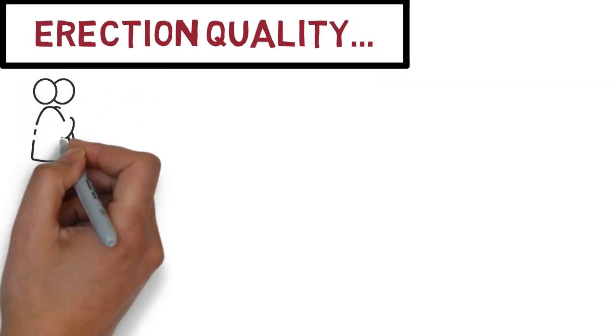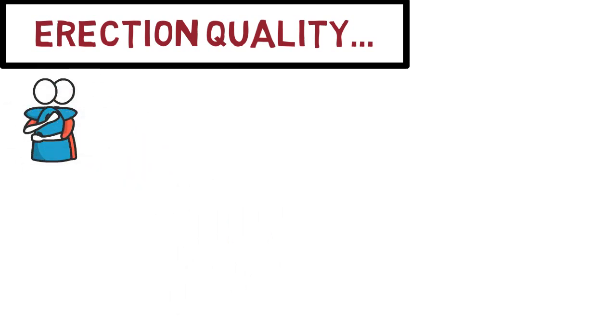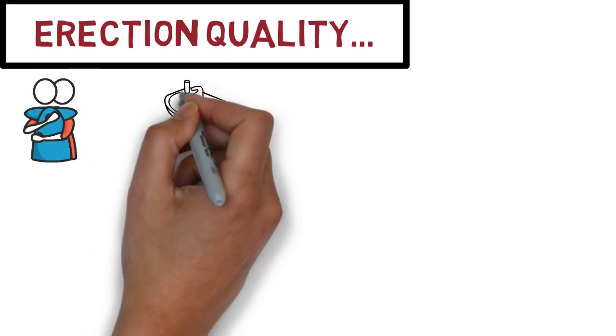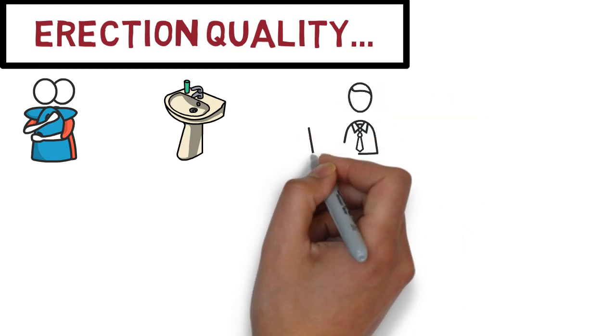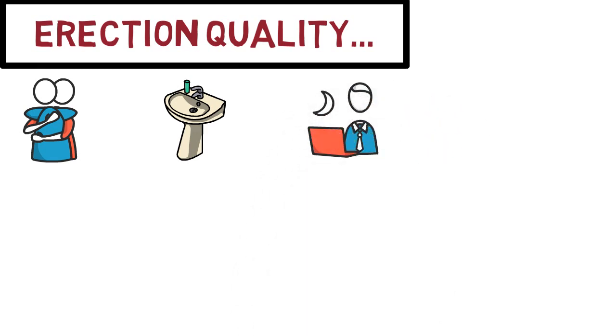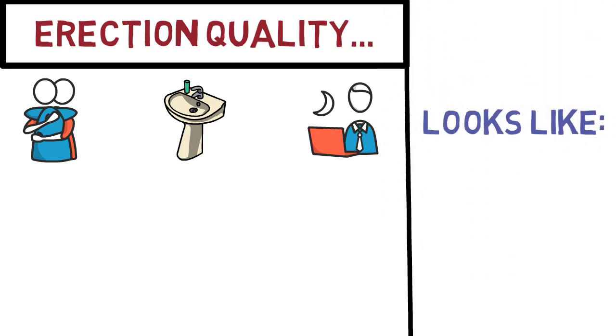This image here represents you being intimate with a real-life partner. And this image right here represents porn-free masturbation that you do, for example, in the bathroom. And this image right here represents you masturbating to porn. And over here, we will look at the conclusions.